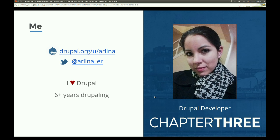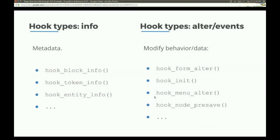As you all know, Drupal 8 has changed. We used to have lots of types of hooks — information hooks, alter hooks, and event hooks. They either allowed one module to define metadata and tell other modules how they could extend it — like block info to define other types of blocks, token info for tokens, or entity info to define custom entities. And there were alter and event hooks to react to other events within the system, like hook init for page loading or menu alter to alter the menu structure.